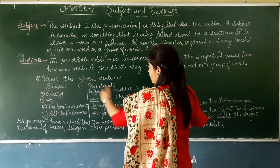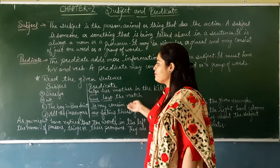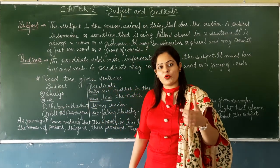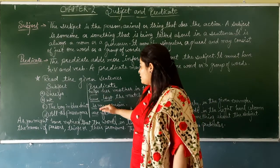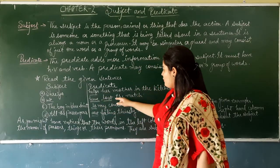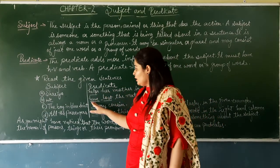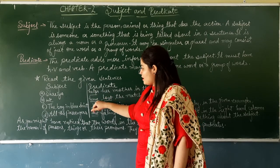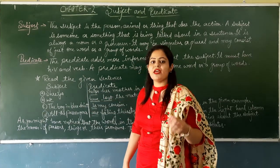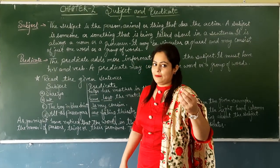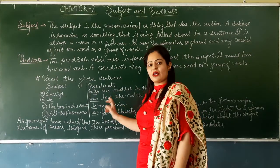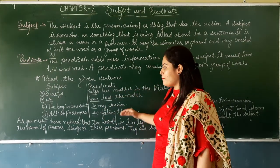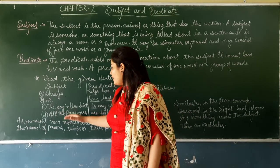Second example — 'We.' Ab 'We' yahan par kya hai? Pronoun. Aur predicate hai: 'have lost the match.' Ab humein kaise pata chalega yahan predicate kyun hai? 'Have' se — have hai hamara helping verb, uske turant baad hamara verb — 'lost.' To yeh hamara predicate ho gaya.